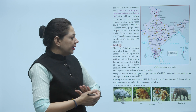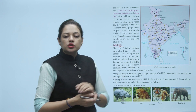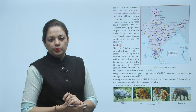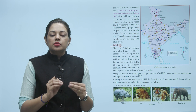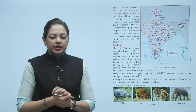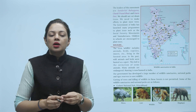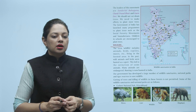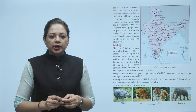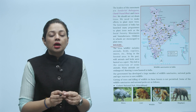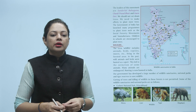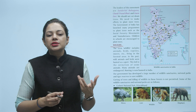This map shows where national parks and wildlife sanctuaries are located across India. The term wildlife includes animals, birds, reptiles, insects, etc., living in forested areas. In the past, wild animals and birds were hunted as a sport, which led to the extinction of some animals. Many animals are now endangered, and hunting is banned in India.